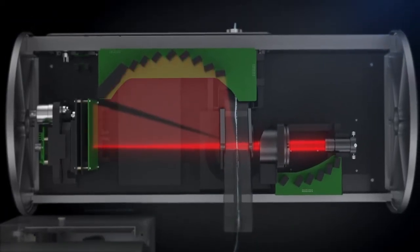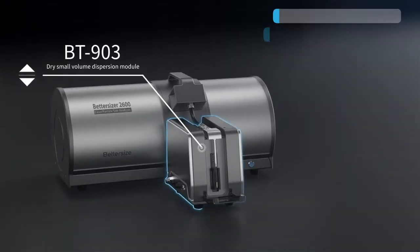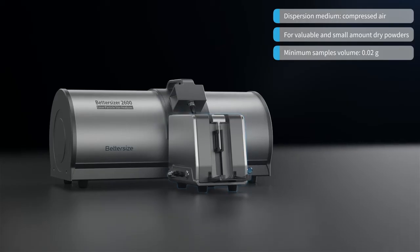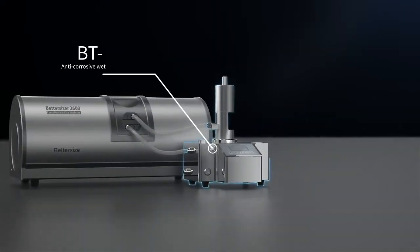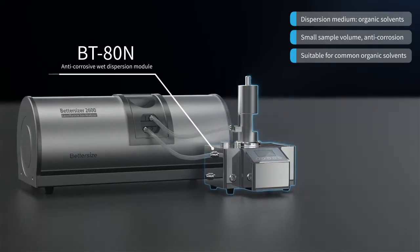Based on your needs, we also offer the BT-903 dry small volume dispersion module for valuable and small amounts of dry powders, and the BT-80N anti-corrosive wet dispersion module for particle size measurements with organic solvents as the media.